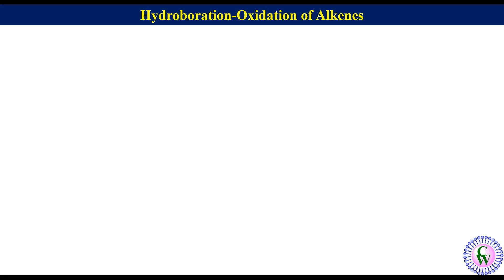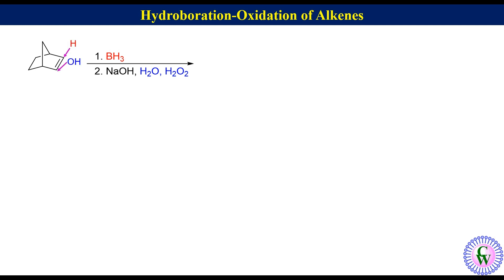Hydroboration oxidation of norbornene: here both the alkenic carbons are symmetrical, so there will be equal probability for attack by H and OH. There are two faces of the alkene for the attack, but the attack preferentially occurs from the less hindered exo face to produce the exo-alcohol along with its enantiomer.